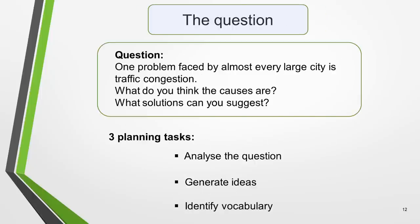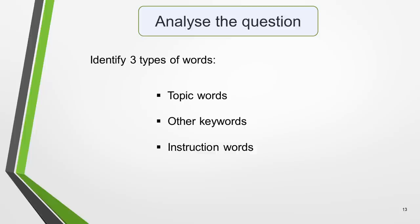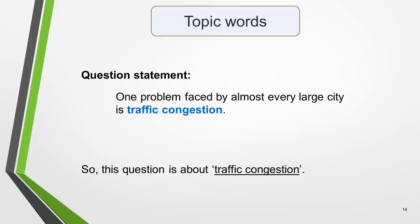Here's the question we're going to be answering in our model essay, followed by the three steps of the planning process. The question: One problem faced by almost every large city is traffic congestion. What do you think the causes are? What solutions can you suggest? The three planning tasks are to analyse the question, to generate ideas, and to identify vocabulary. Analysing the question is an essential step in the planning process and will ensure that you answer the question fully. It's quick and easy to do — you just need to identify three different types of words: topic words, other keywords, and instruction words. Topic words are the ones that identify the general subject of the question and will be found in the statement part of the question. I've highlighted them here in blue.